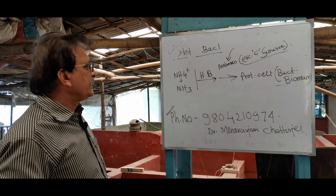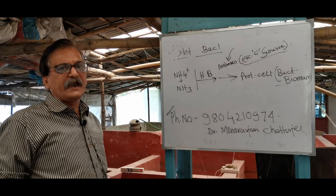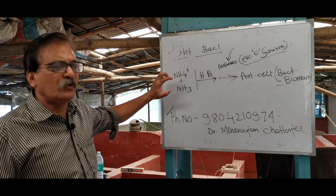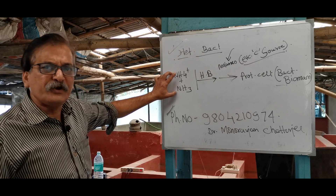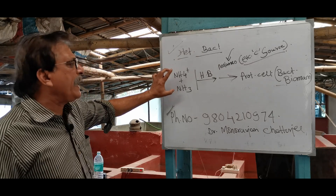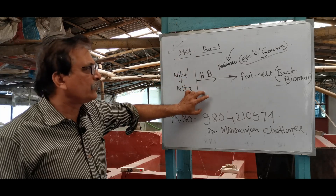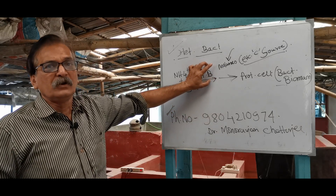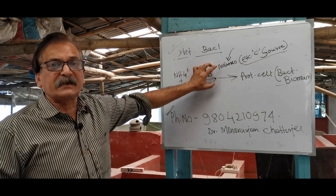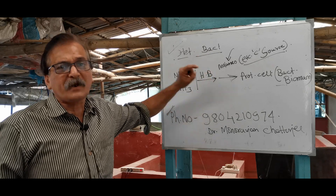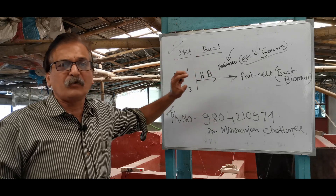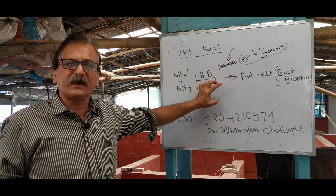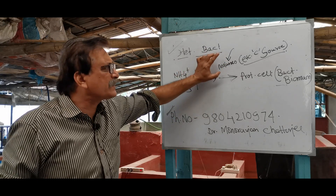What do heterotrophic bacteria do? Heterotrophic bacteria convert protein. Ammonium by ammonia. Heterotrophic bacteria use a carbon source. Molasses is the carbon source.